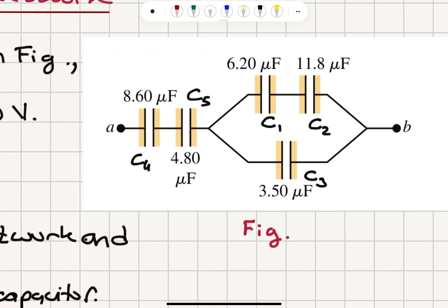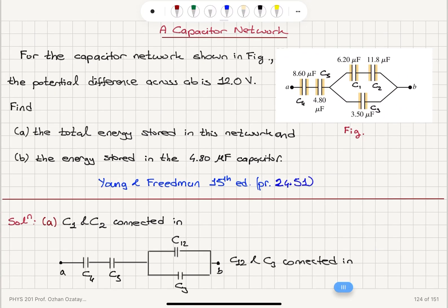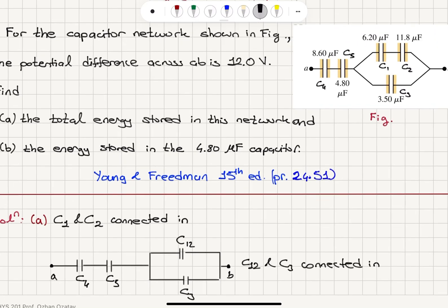So we have five capacitors. C1 and C2 are connected in series, connected in parallel with C3, and this combination is connected in series with C4 and C5. So our first task is to find the equivalent capacitance for this network.